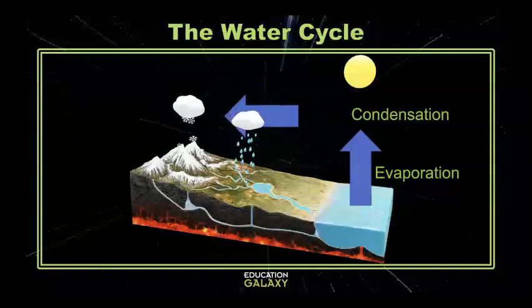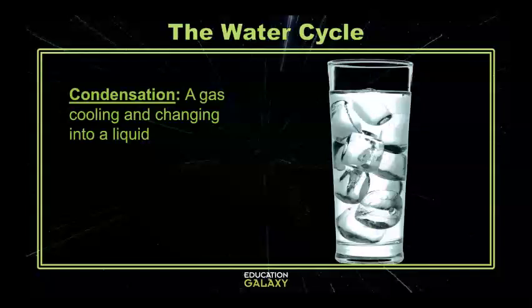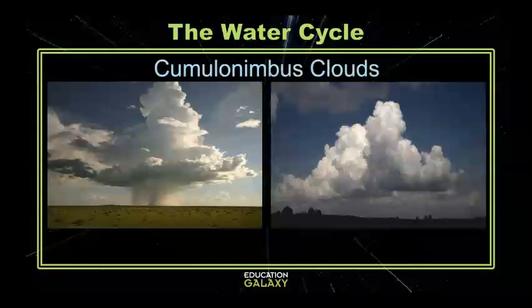Condensation is when water vapors cool back down and become liquid again. Condensation also happens when you set a cold glass of water out on a table on a hot day and the outside of the cup gets wet and starts to sweat. The cup of water isn't actually sweating — it's just cold enough to cool off the water vapors in the air. In the sky, there's no cup for the water to collect on, so after a while, the liquid water collects together to form clouds.